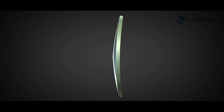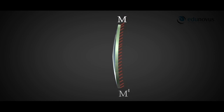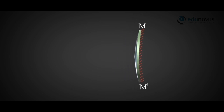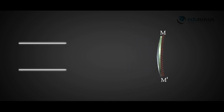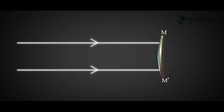Consider a convex mirror. As you can see, this is the reflecting surface. As you turn around the mirror, you can see the non-reflecting surface. The curved line mm', which is the diameter of the circular rim of the mirror, is called the aperture. It is the part of the mirror through which light rays enter. The centre of the spherical surface of the mirror is called the pole of the mirror, denoted by P.